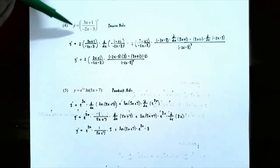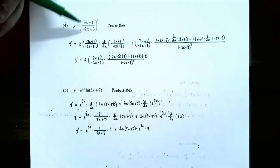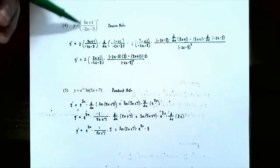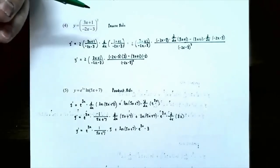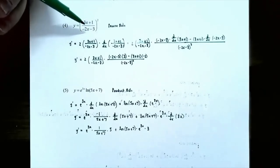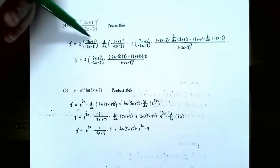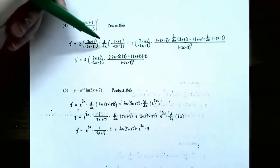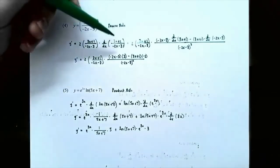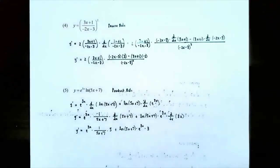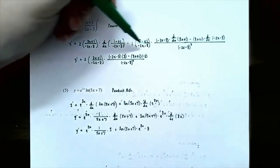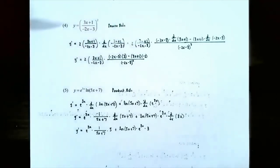Number four: the function is y equals the fraction 3x plus 1 divided by negative 2x minus 3, and that fraction is raised to the second power. Since it's a function being squared, use the power rule first. y prime: think of the inside function as u, so you have u squared. Bring the coefficient down to get 2, keep the inside function the same, then because of the chain rule take the derivative of the inside function 3x plus 1 divided by negative 2x minus 3. That inside function is a fraction, so use the quotient rule.